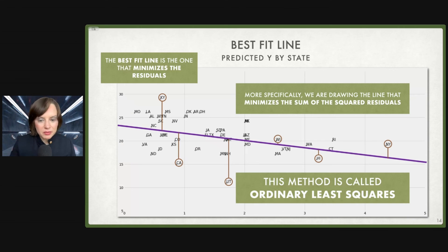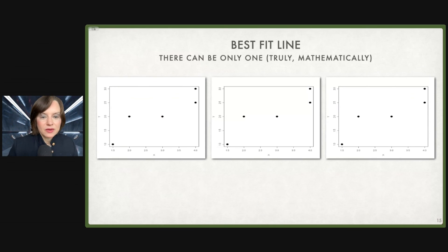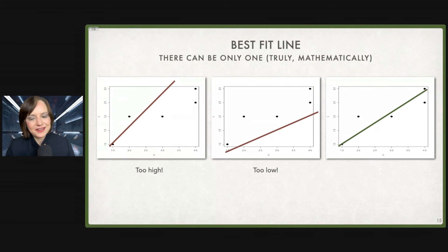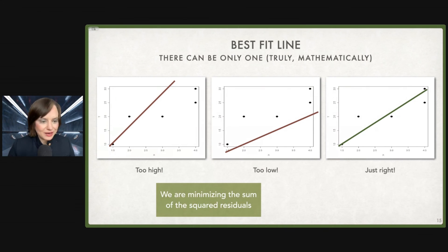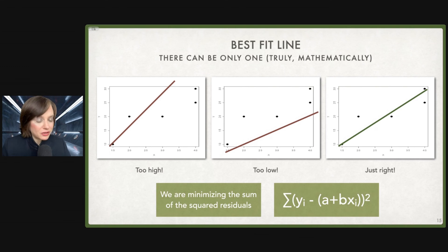The reason we're doing the squares is because otherwise the negatives and positives would cancel out. So we square the values for all of these residuals. So New York's residual is some number. Hawaii's residual is minus some number. California's residual is minus some number. Kentucky is a positive number. We square all of those and then we find the line and we could do it by hand, or in Python in two lines of code. Find that line for us. There can only be one best fit line truly mathematically. This is too high. This is not the best fit line. This is too low. Oh, just right. We are minimizing the sum of the squared residuals. That's how we're calculating it.